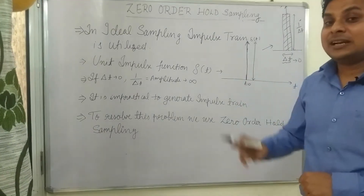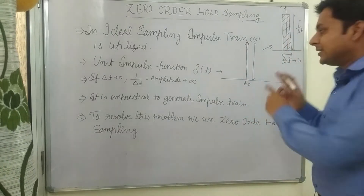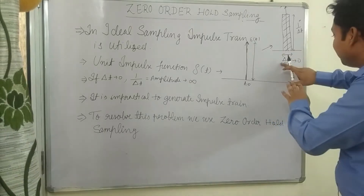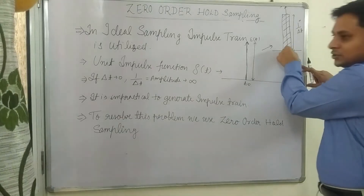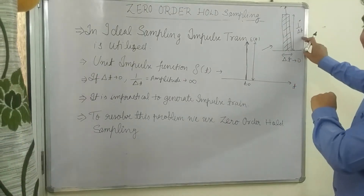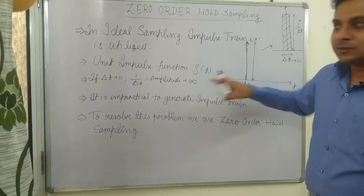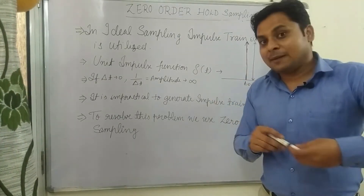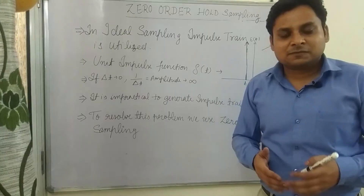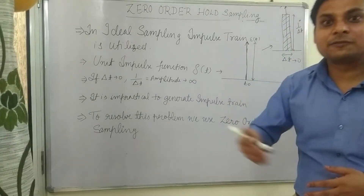It is an impulse function and by definition it exists only at one point, meaning the time interval must shrink to zero — delta tending to zero. If delta tends to zero, then 1/delta, which is the amplitude, becomes 1/0, which is infinity. So in an impulse function the amplitude tends to infinity. It is not possible to generate a pulse with infinite amplitude, so we need another practical approach.